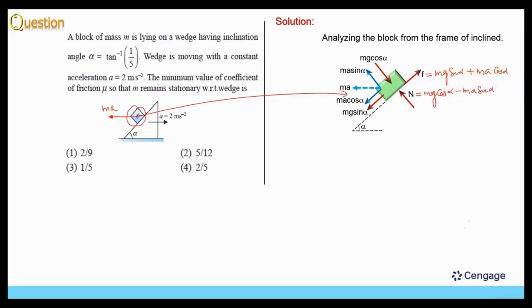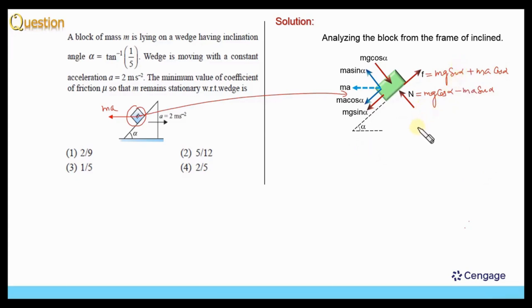Now we can take m as a common factor. So we can write the friction force f equal to m times (g sin alpha plus a cos alpha). So this is the value of the friction force.